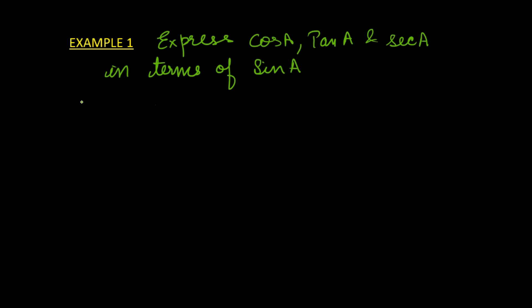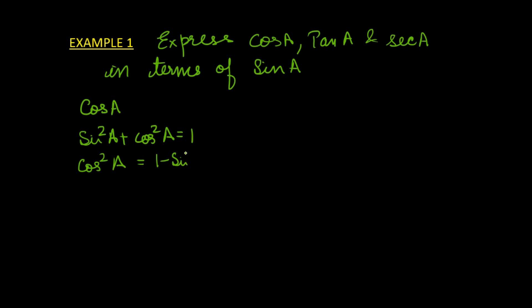Let us try expressing cosine A in terms of sine A. Which identity contains both cosine and sine? We know that sin²A + cos²A = 1. From here, cos²A can be written as 1 − sin²A. So, cosine A can be written as the square root of 1 − sin²A. We have expressed cosine A in terms of sine A.